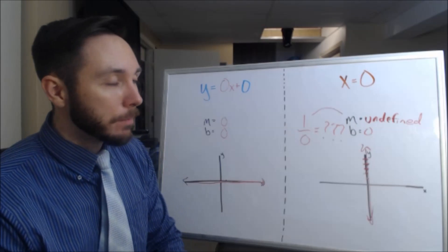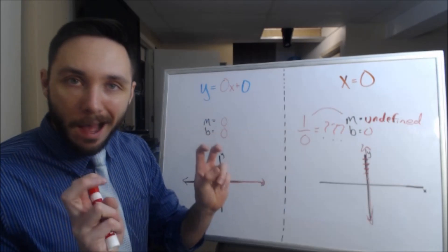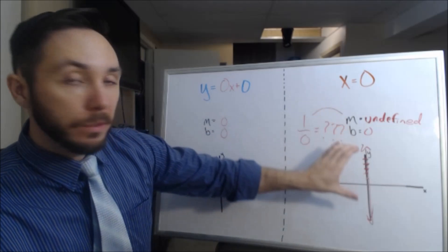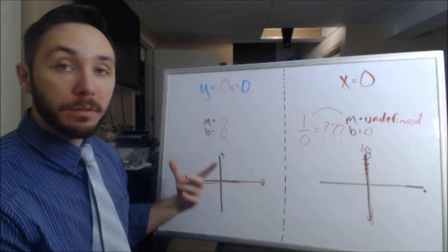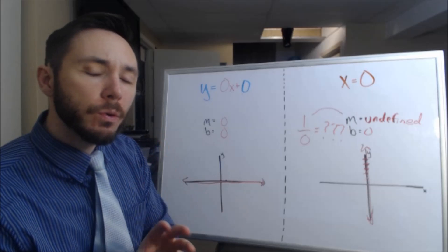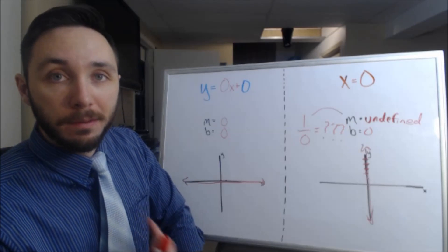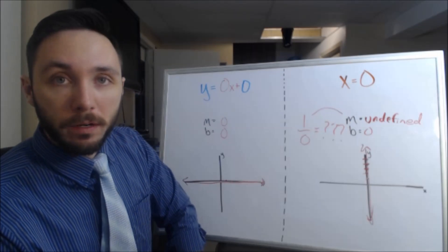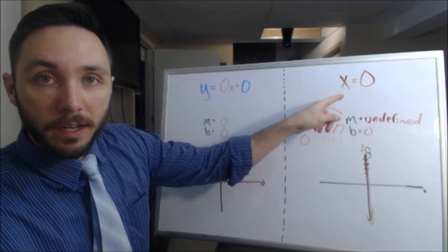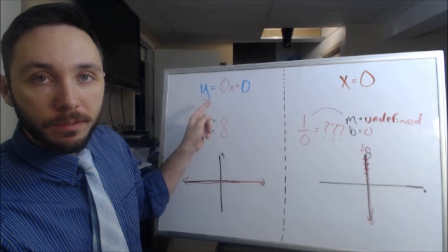So a lot of kids just tend to memorize the, oh, it's the opposite idea with x = on the y-axis and y = on the x-axis. But the shortest, easiest way to verify, in my opinion, is to think about the ordered pairs. Here we have ordered pairs of x value 0. Here we have ordered pairs of y value 0.